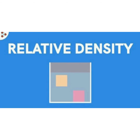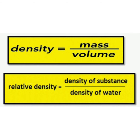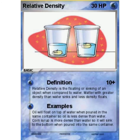Next is relative density, which means comparing one substance to another, such as a solid and liquid or two liquids. Relative density of a substance is the density of that substance compared to the density of water. The formula is: relative density equals density of substance divided by density of water.